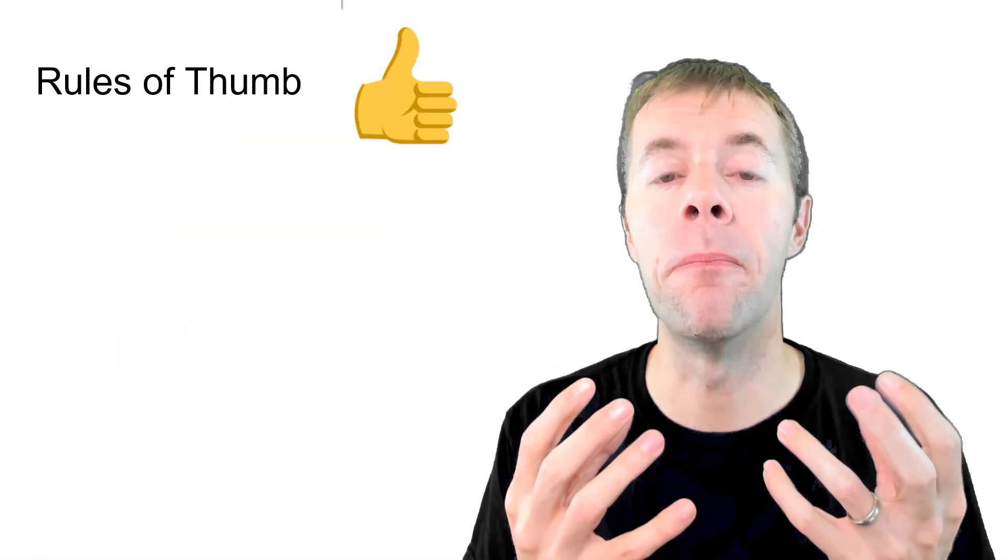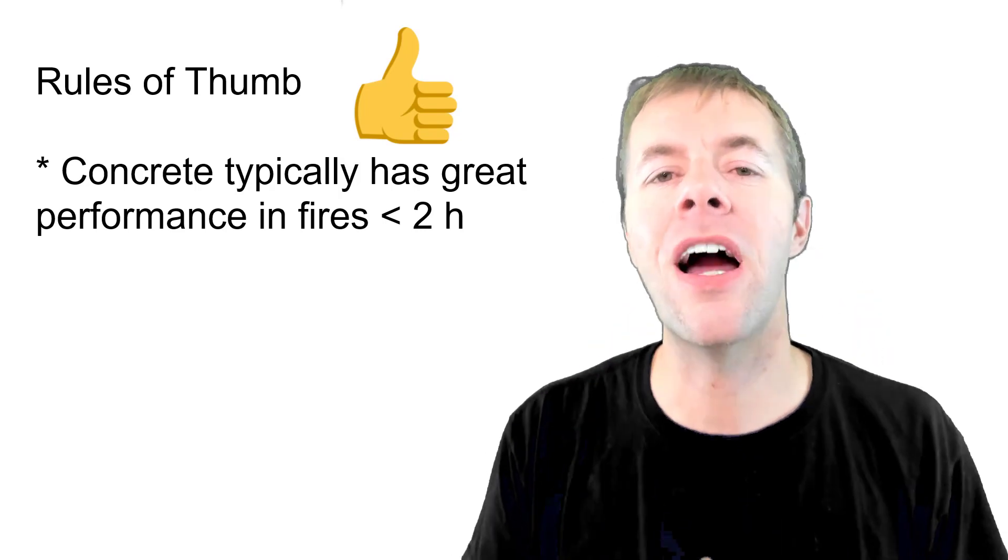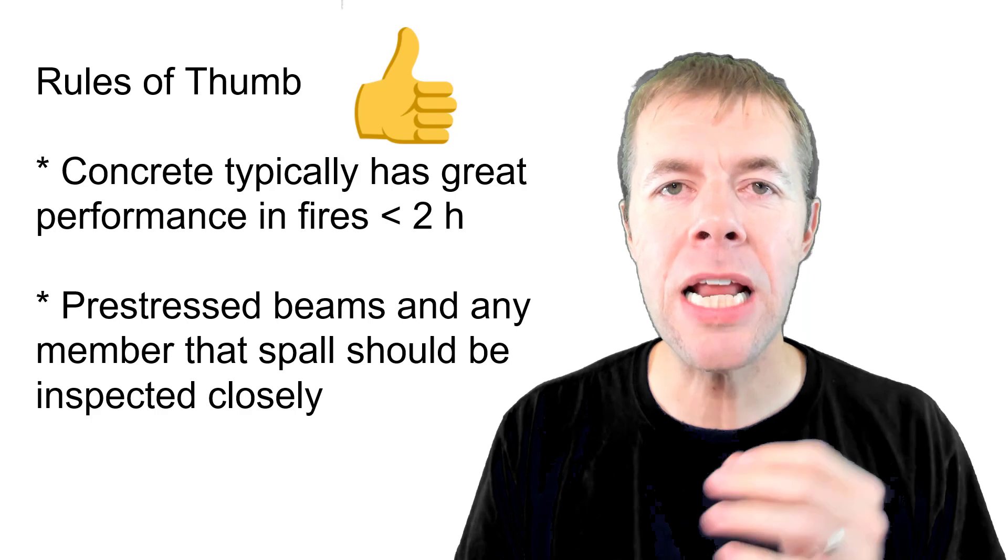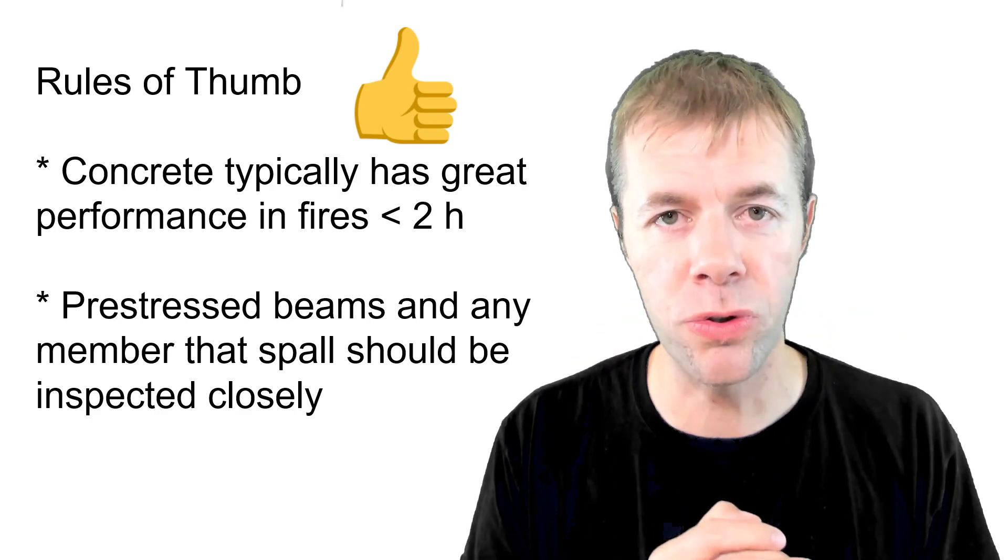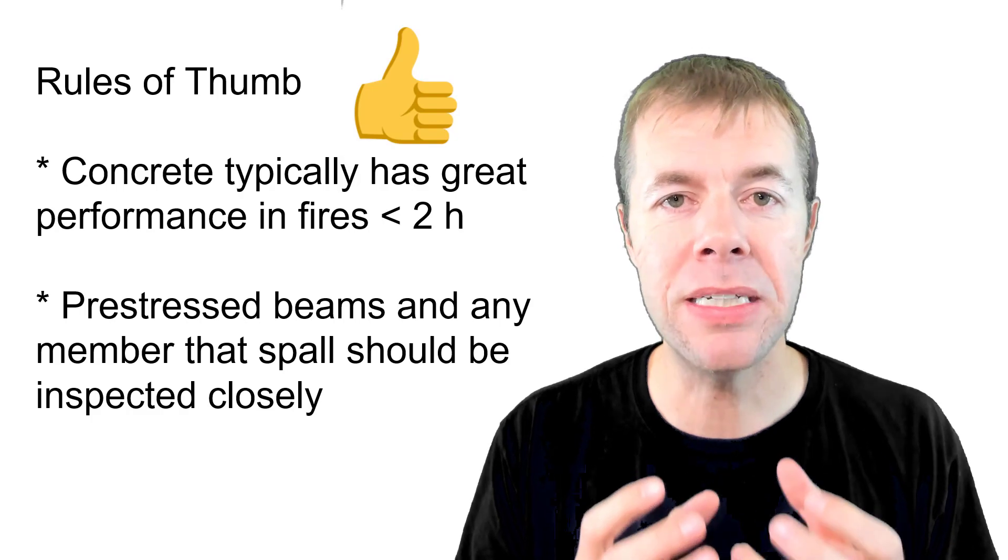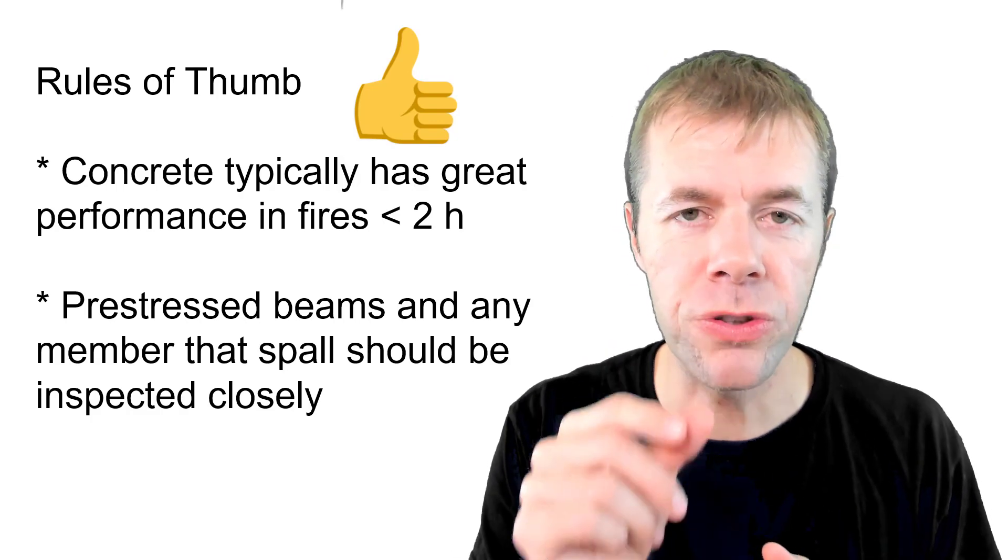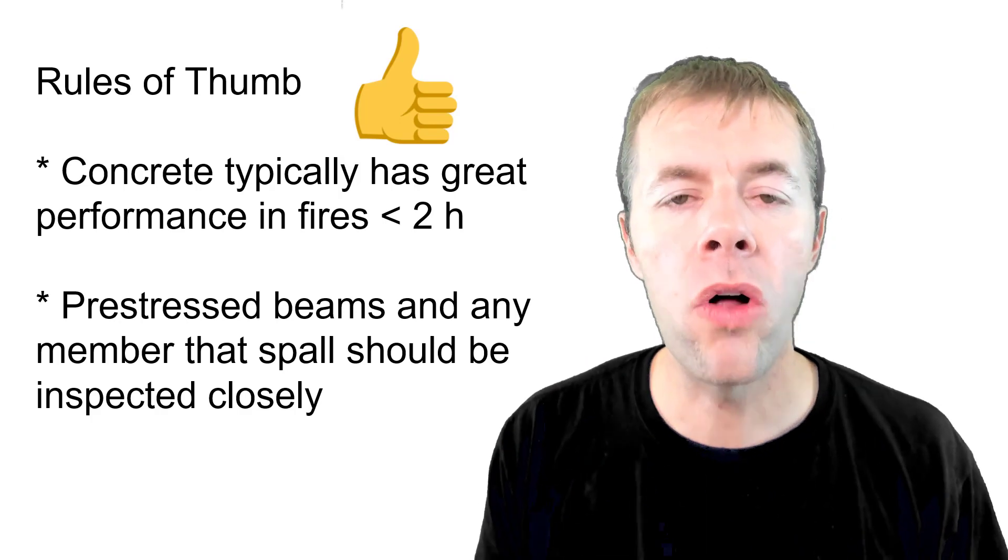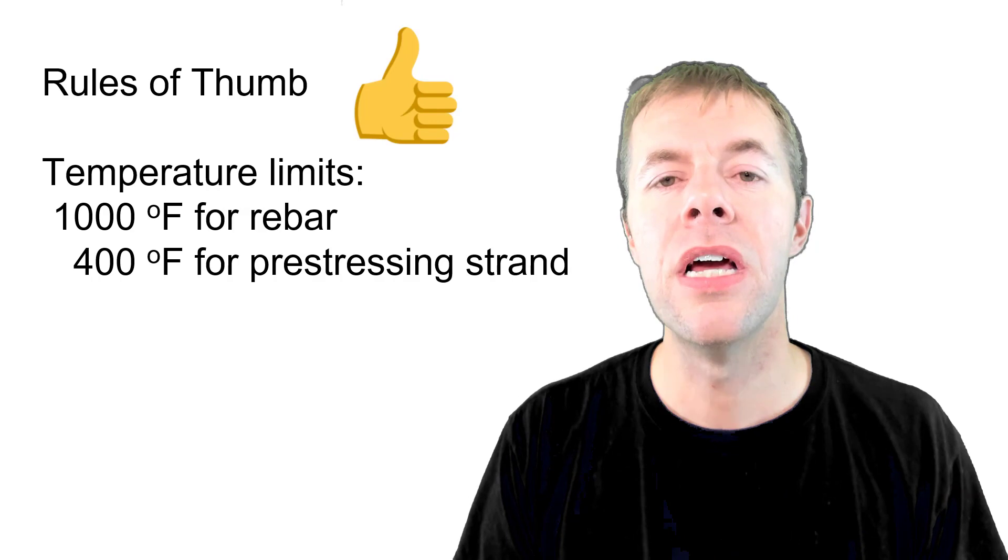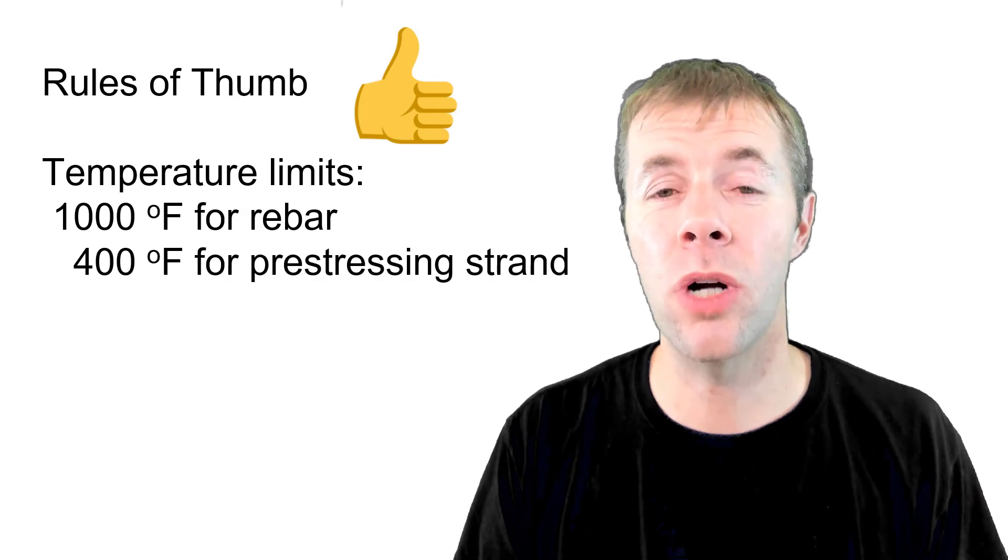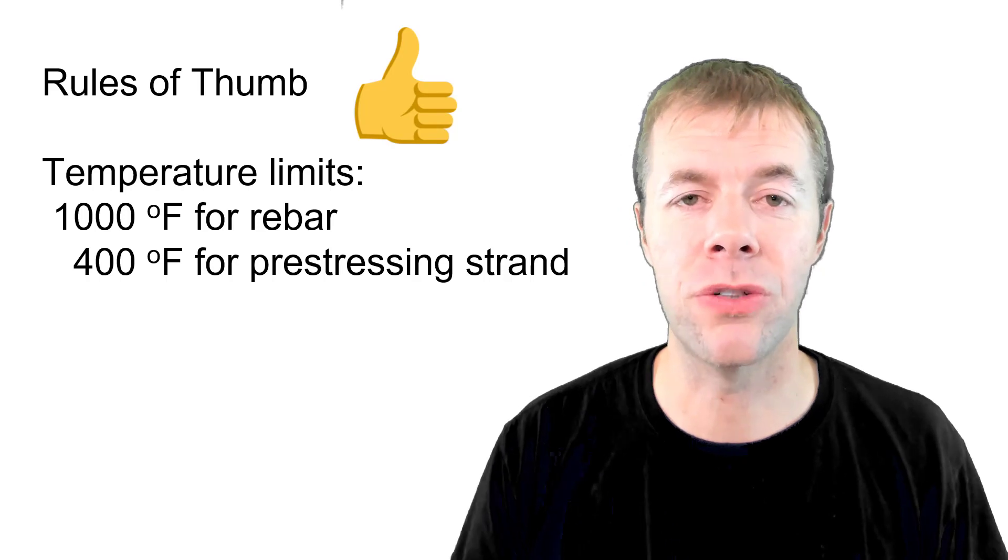So some rules of thumb. Concrete typically has great performance in fires less than two hours. Pre-stressed beams and any member that spall should be really inspected closely. That spalling can be a big deal. We also have to understand if we've lost our bond between the reinforcing and the concrete all along the length. The temperature limit about a thousand degrees Fahrenheit is where rebar starts to become in trouble. And 400 degrees Fahrenheit is the issue for pre-stressing strands.